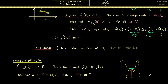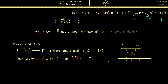Rolle's theorem seems very natural: if we have such a function, there should be a local minimum or maximum somewhere. So let's prove it. We start with the simple case that f is constant. Then it's differentiable and fulfills f(a) = f(b), but also the derivative is equal to zero — and this holds for all x in the whole interval. So we can simply choose any point for x-hat and we are finished.